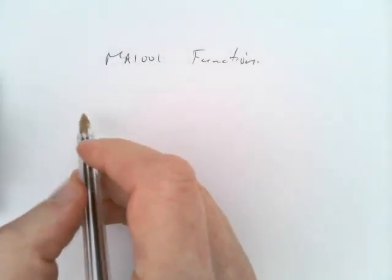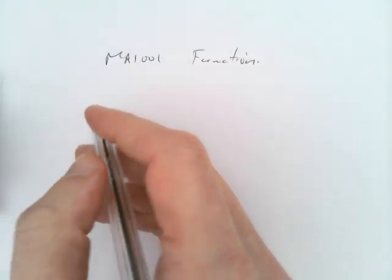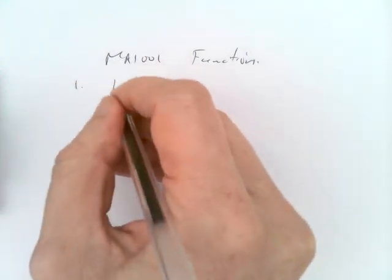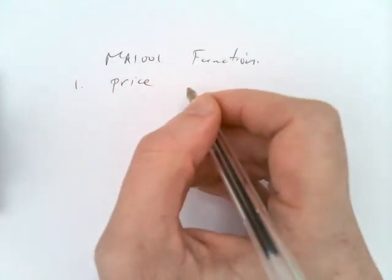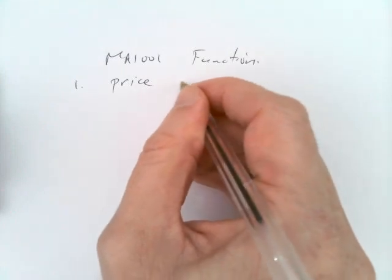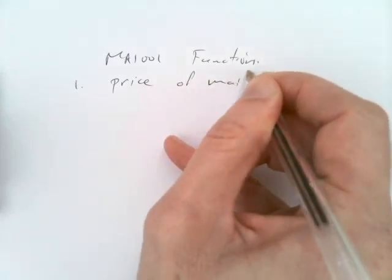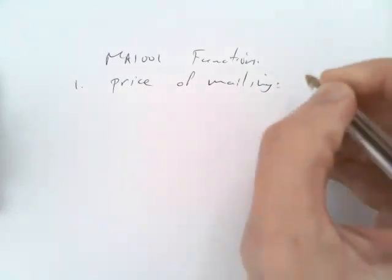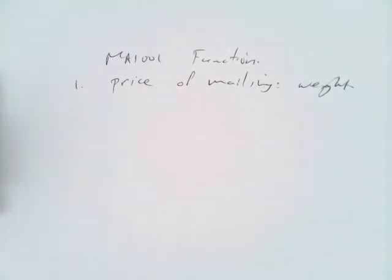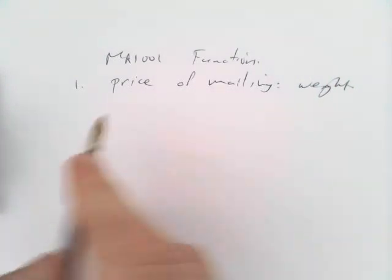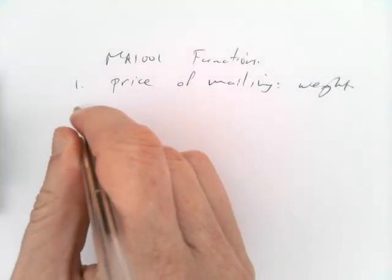So what is a function? When we have some quantity that depends on another quantity. For example, price of mailing a packet. It depends on the weight of the packet. When you go to the post office, you have to pay more if it's heavier. So it's a function of the weight.